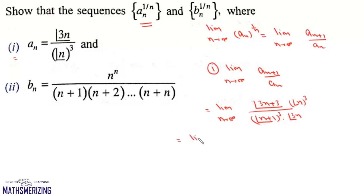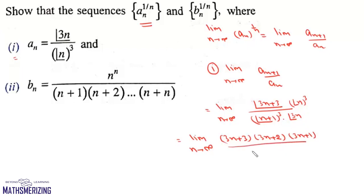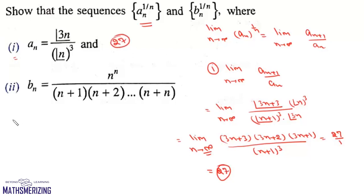We can write this as the limit as n tends to infinity of (3n+3)(3n+2)(3n+1) — since factorial(3n) will cancel — upon (n+1) whole cubed. This is an infinite limit; the highest power of n is 3. The coefficient of the highest power of n in the numerator is 27 and in the denominator is 1, so the value of this limit is simply 27.